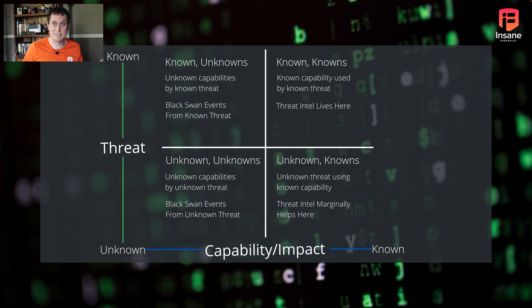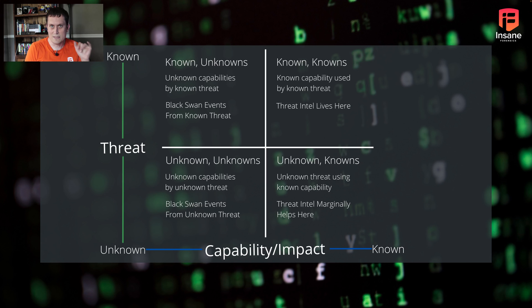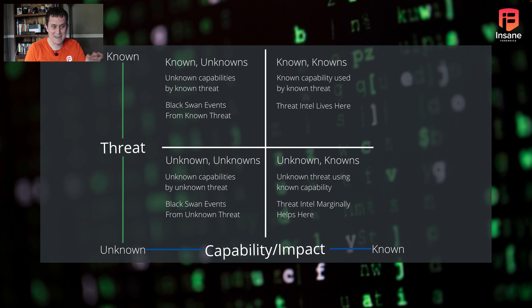This is where threat intelligence is incredibly valuable, because we can take threat intelligence directly into a threat hunt and say, hey, I'm going to search for APT29 or APT34 because I know the tools they've used in the past. A lot of people will say, just worry about the known knowns — it's easy to sell that approach. But the focus of this talk is to say why you should move beyond known knowns.